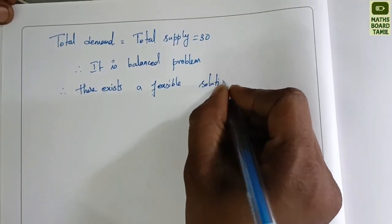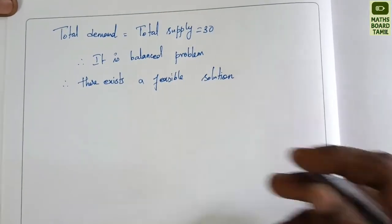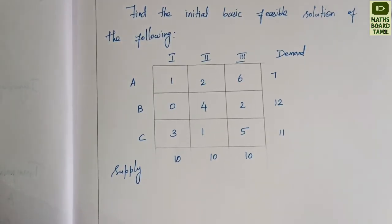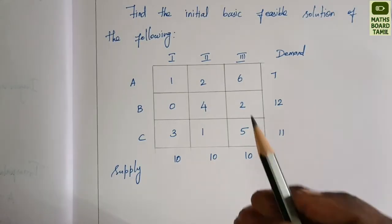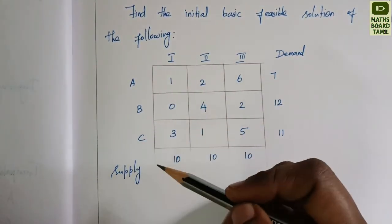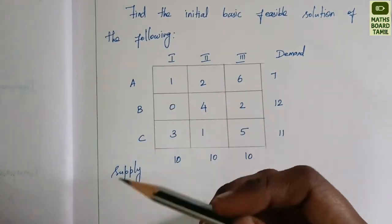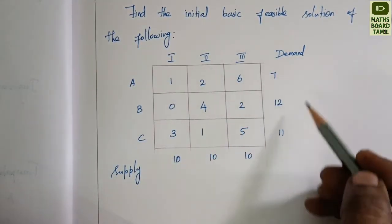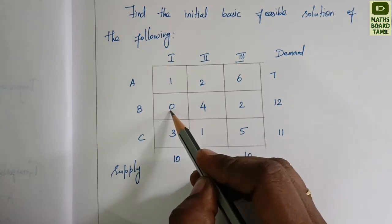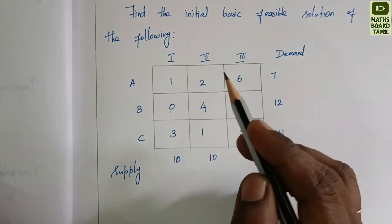Now we apply the least cost method. In the least cost method, we identify the cell with the minimum cost and allocate as much as possible to that cell.